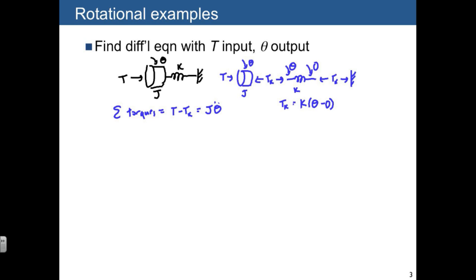If we substitute everything in, what we end up with is J theta double dot plus K theta is equal to the torque T. So this is our input-output differential equation with theta as output and T as input.